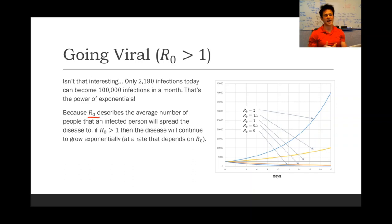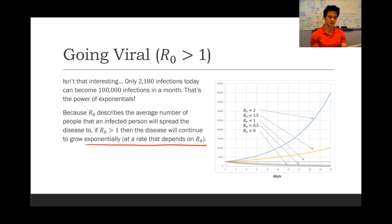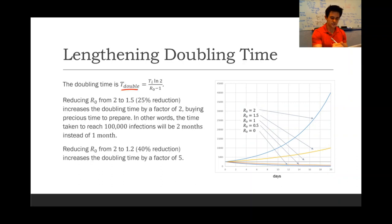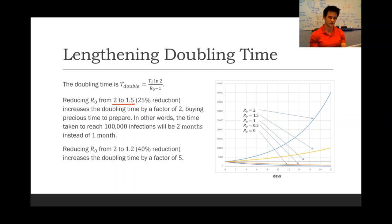R0 describes the average number of people that an infected person will spread the disease to. So if R0 is greater than 1, the disease will continue to spread exponentially, and the rate of that exponential growth depends on the value of R0. Here I'm plotting the number of infections after 20 days for various values of R0. The doubling interval is proportional to the average time spent being infectious divided by R0 minus 1. So if you reduce R0 from 2 down to 1.5 — only a 25% reduction — this increases the doubling time by a factor of two, which buys precious time to prepare the medical system to respond to the disease.